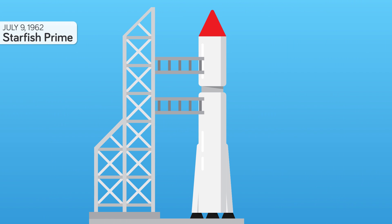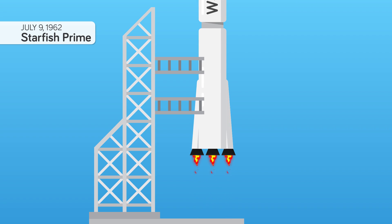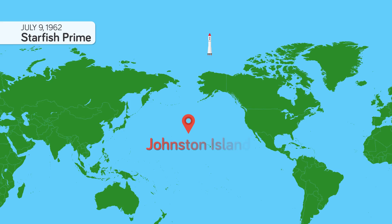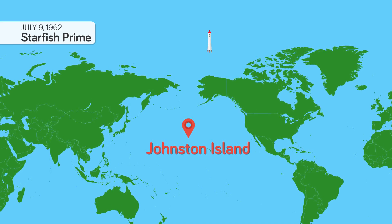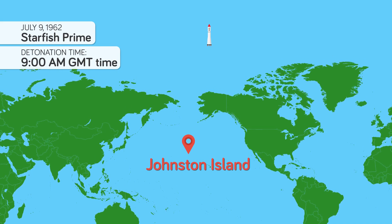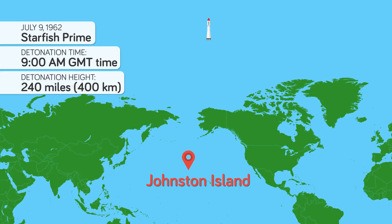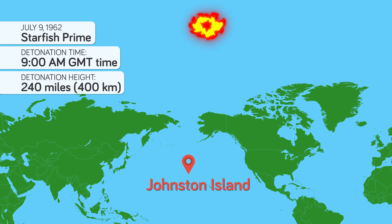One fine morning on July 9th, 1962, the US mounted a W49 thermonuclear warhead on a Thor rocket to conduct a test known as Starfish Prime. It was launched from Johnston Island, 900 miles southwest of Hawaii, past the upper atmosphere. At 9am GMT time, 11pm in Hawaii, when the missile was on its way back down and had reached 240 miles above sea level, the US detonated the nuke.